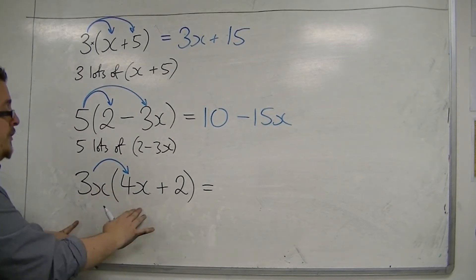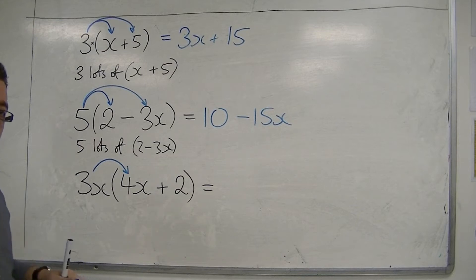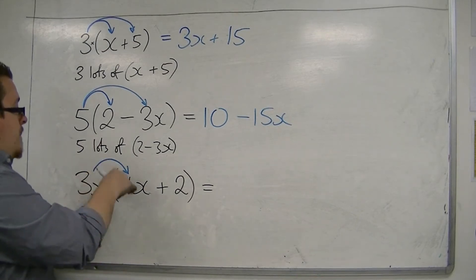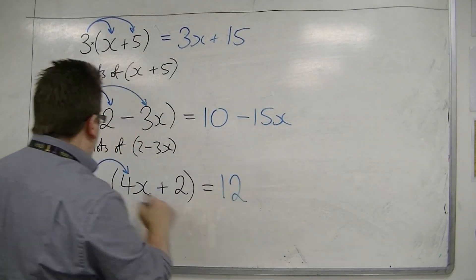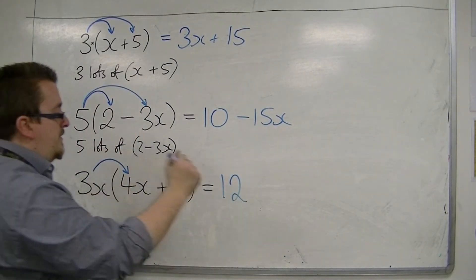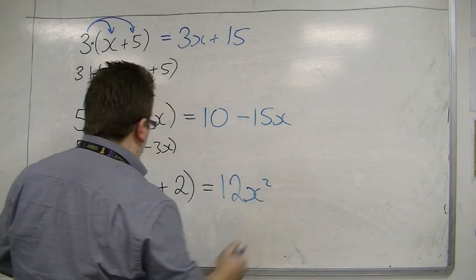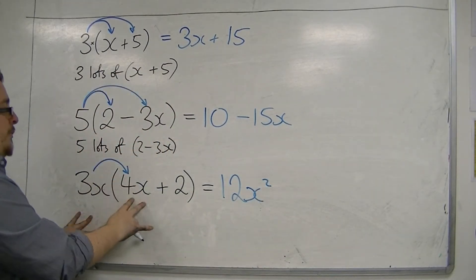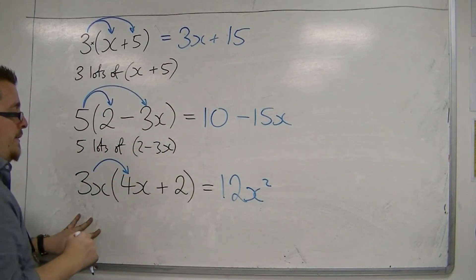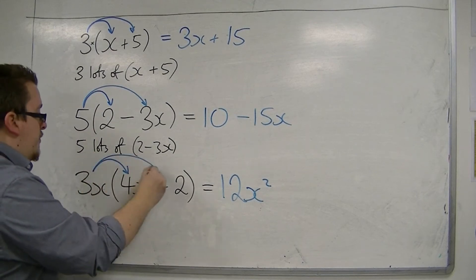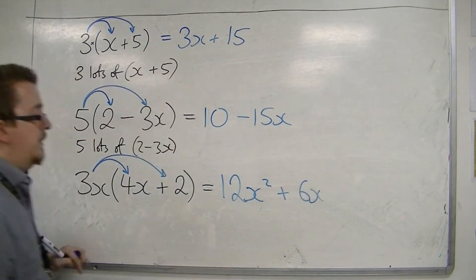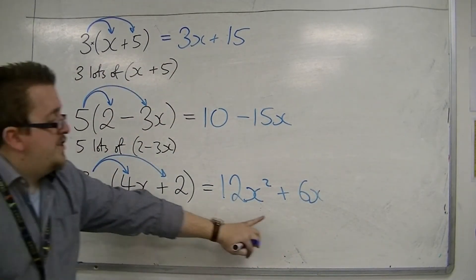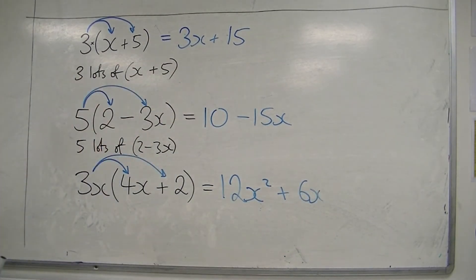Now 3x times 4x we've looked at in another video before this. And I deal with the numbers first. So I've got 3 times 4 is 12. And then I've got x times x is x squared. So 3x times 4x is 12x squared. Then I need to multiply the 3x by the 2. So that's 6x. So expanded, this is 12x squared plus 6x.